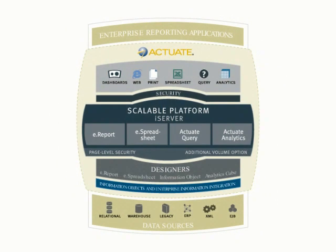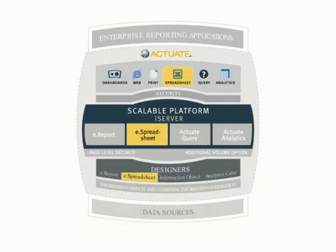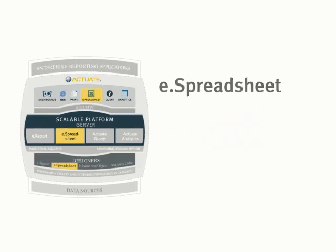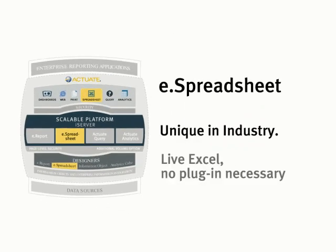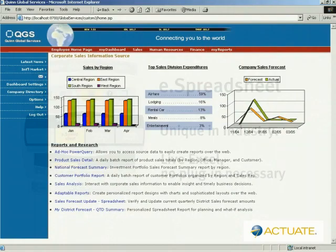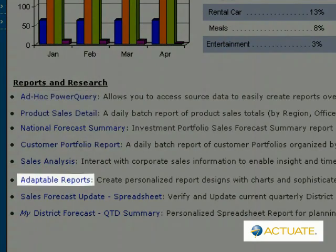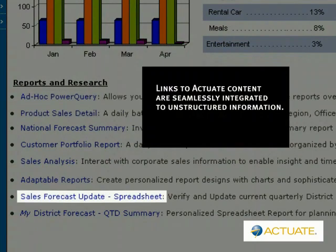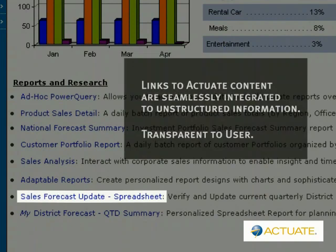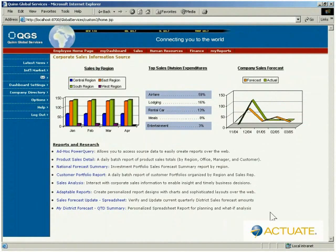Actuate eSpreadsheet is a powerful tool for distributing critical business information as Excel spreadsheets while maintaining full control over data management. The eSpreadsheet enables business users to create and receive live data in the familiar spreadsheet format for immediate analysis and action, with no need for training or support. Actuate eSpreadsheet delivers all the features and capabilities users expect from spreadsheets while providing vital centralized spreadsheet maintenance, archiving, versioning, and security.